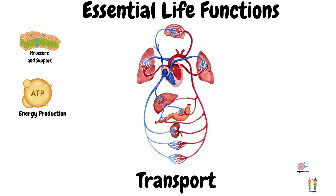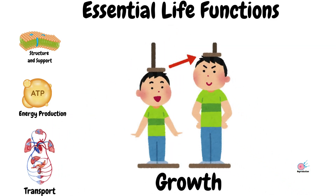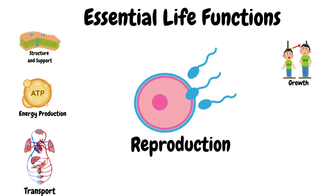Transport: cells maintain a stable internal environment by actively transporting nutrients in and waste products out across the cell membrane. Growth: organisms can grow through an increase in the number of cells, which happens as a result of cell division, mainly through mitosis. And finally, reproduction: cells enable reproduction through the processes of mitosis and meiosis, passing genetic information to the next generation. These are some of the reasons why the cell is truly the fundamental unit of life — a self-contained, self-replicating marvel of biology.